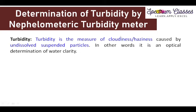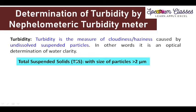First, we are going to understand what is called turbidity. Turbidity is the measure of cloudiness or haziness caused by undissolved suspended particles. In other words, it is an optical determination of water clarity. Now, what causes this turbidity? Total suspended solids — those particles which have a bigger size, greater than 2 microns — are considered suspended particles. Through turbidity measurement, we are going to measure these total suspended solids.